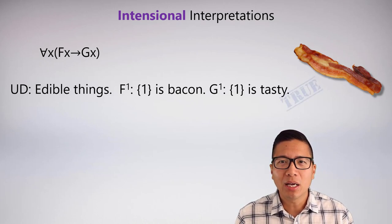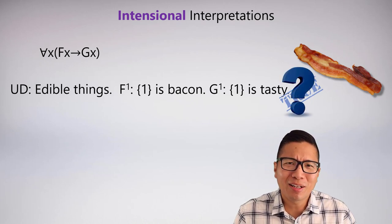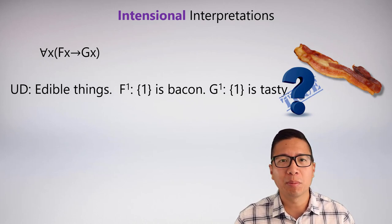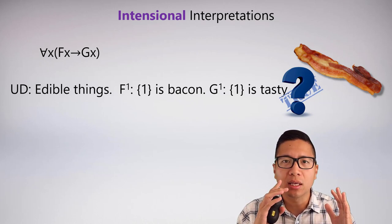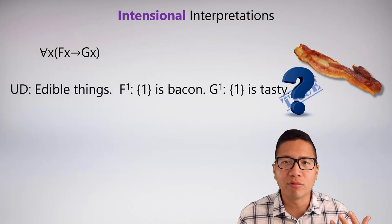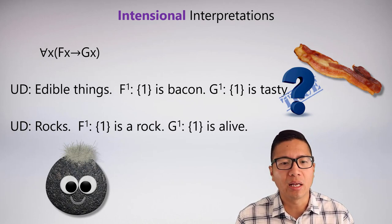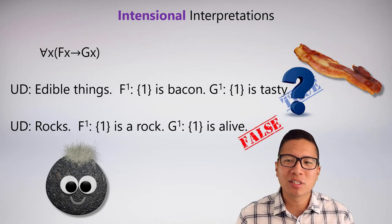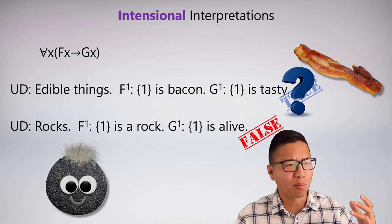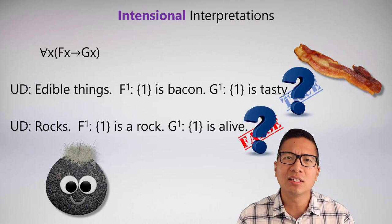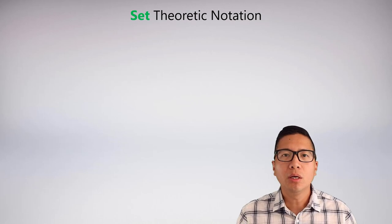Once we have an interpretation we can ask if the sentence is true or false. The answer here seems true — bacon is great — but that's not universally agreed upon. The truth value is still unclear, which is a problem. I could try another interpretation: the universe of discourse is rocks, and if you're a rock then you're alive. Most people would say this is false, but maybe all rocks are alive in some sense. This sort of territory is not what we want when learning predicate logic semantics.